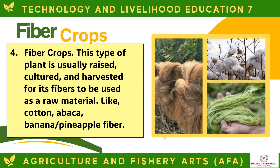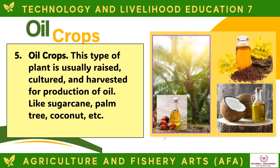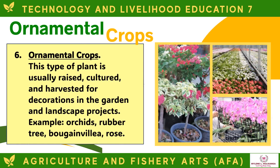Fiber crops are raised, cultured, and harvested for their fibers to be used as raw material, like cotton, abaca, banana, and pineapple fiber. Oil crops are raised, cultured, and harvested for production of oil, like sugarcane, palm tree, and coconut. Ornamental crops are raised, cultured, and harvested for decorations in the garden and landscape projects, such as orchids, rubber tree, bougainvillea, and rose.